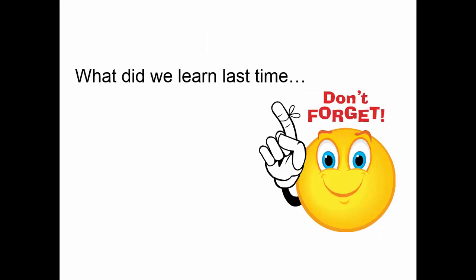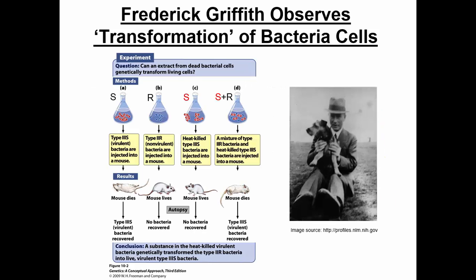So what did we learn last time in class? Last time, we studied basically how we discovered that DNA was genetic material. We began at the beginning of the 1900s with Frederick Griffith, and he showed us how transformation occurred with bacteria.